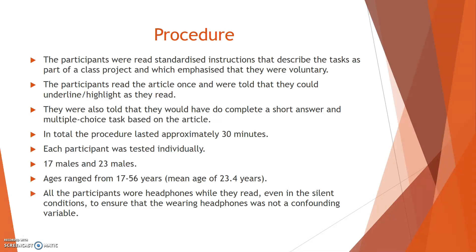Procedure. The participants were read standardised instructions that described the tasks as part of a class project and emphasised that they were voluntary. The participants read the article once and were told that they could underline or highlight as they read, and that they would have to complete a short answer and multiple-choice task based on the article. The procedure lasted approximately 30 minutes, and each participant was tested individually. There were 17 females and 23 males, with ages ranging from 17 to 56 years, with a mean age of 23.4 years. All participants wore headphones while they read, even in the silent conditions, to ensure that wearing headphones was not a confounding variable.